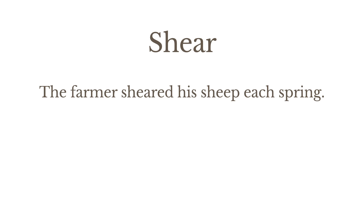'Shear' with an A means to cut. For example, 'the farmer sheared his sheep each spring' — in other words, the farmer trimmed the wool from his sheep. You'd use this spelling too to talk about a set of garden shears, and that gives us a way to remember this meaning: the A in 'shear' looks like a set of garden shears.